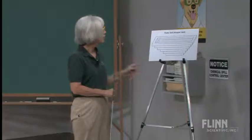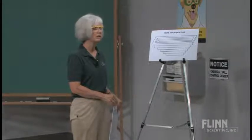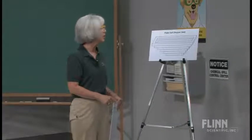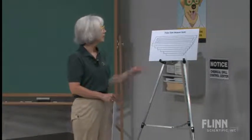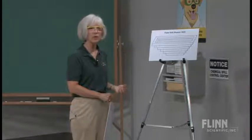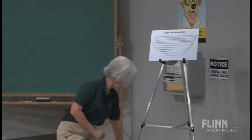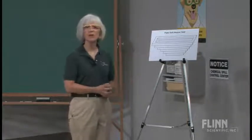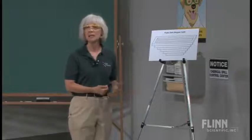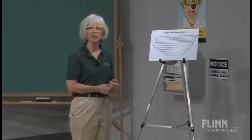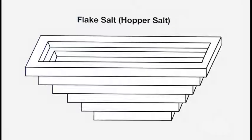Ordinarily, to obtain salt you evaporate water from a brine solution, which gives you the cubic shape. But for hopper salt, they evaporate the water at a very high temperature, very quickly, and under pressure — and what results is these hopper-type crystals. The advantage of hopper salt is that it's less dense, and it clings to your taste buds more easily than cubic salt. When making pretzels and potato chips, they use hopper salt because it not only sticks to your taste buds but also to the product.